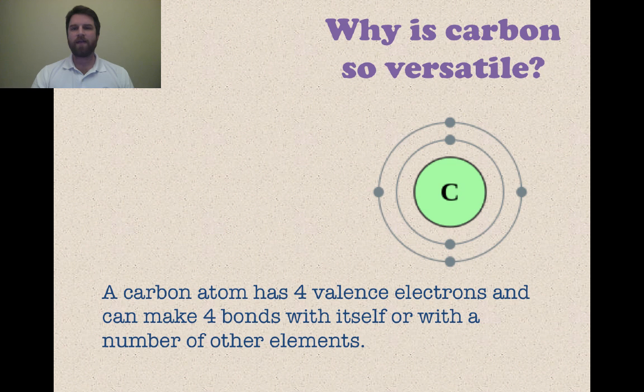To get into a little bit of chemistry, carbon atoms have four valence electrons. That's the electrons on the outer energy level. So if you see that outer ring right there, you see one, two, three, four electrons. This means that it can make four bonds either with itself, other carbon atoms, or other elements. This makes it extremely versatile to get that nice planar geometry that you're looking for.